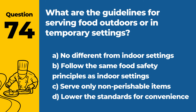Question 74. What are the guidelines for serving food outdoors or in temporary settings? a. No different from indoor settings. b. Follow the same food safety principles as indoor settings. c. Serve only non-perishable items. d. Lower the standards for convenience. Answer b. Follow the same food safety principles as indoor settings. When serving food outdoors or in temporary settings, it's important to follow the same food safety principles as in permanent indoor settings, including temperature control and hygiene.